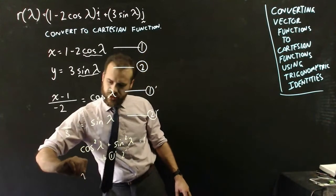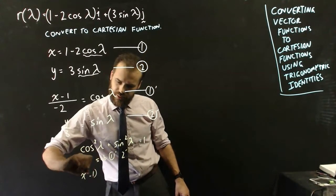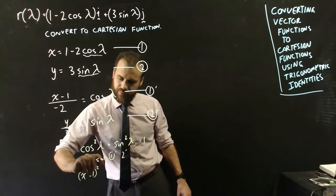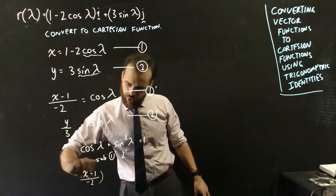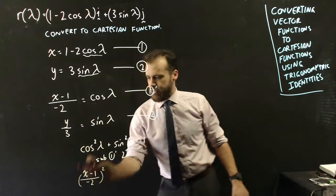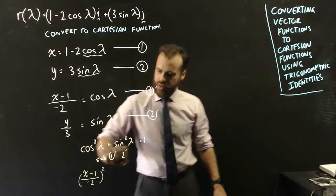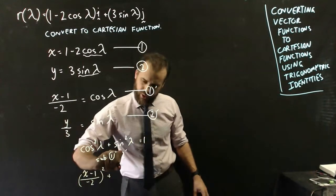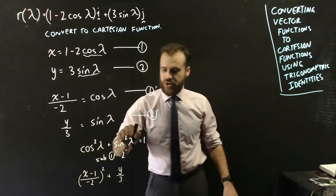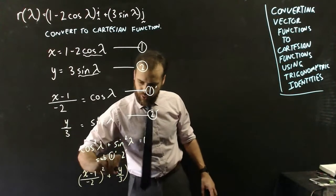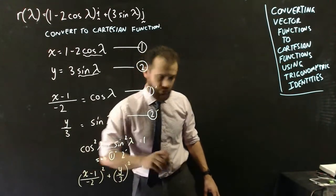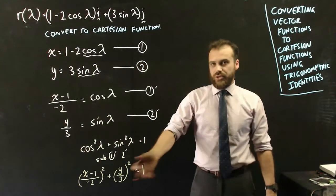that, I'll get x minus 1 over negative 2 all squared, because that bit's cos lambda, and then squaring it, and then adding in y on 3 to sin lambda, and then squaring it, and that's going to be equal to 1. That's pretty close.